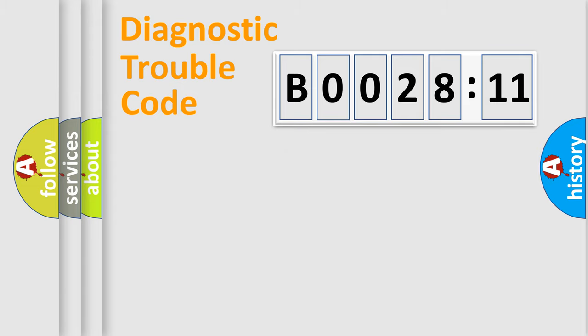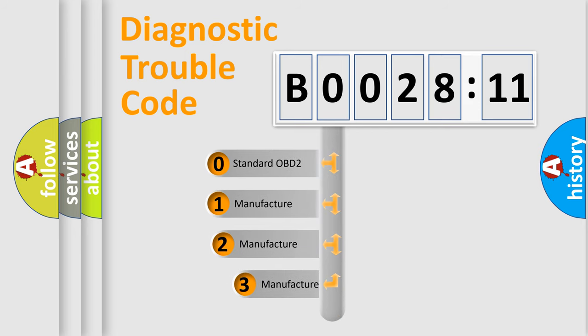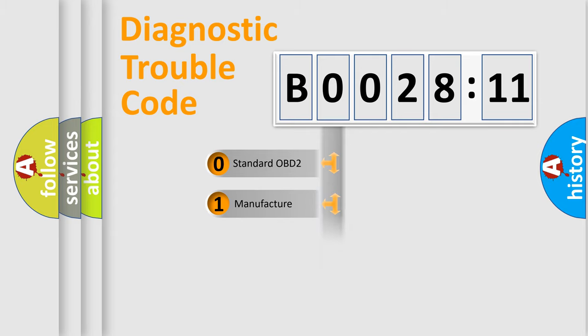The third character specifies a subset of errors. The distribution shown is valid only for the standardized DTC code. Only the last two characters define the specific fault of the group.